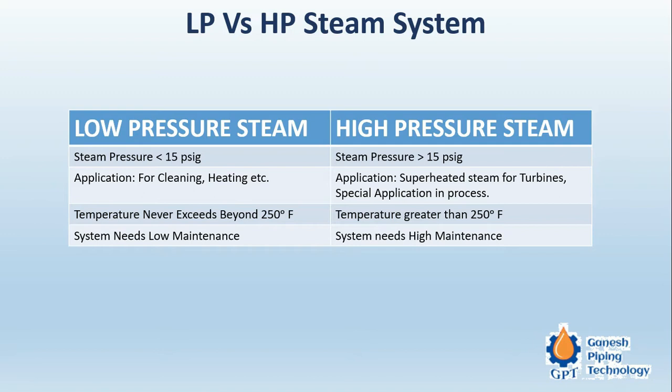Temperature and the degree of superheat are also very important. Normally high pressure steams are superheated or dry steams, which are used in power plants for power generation.